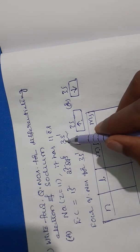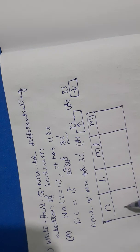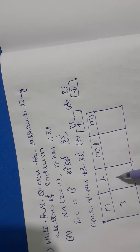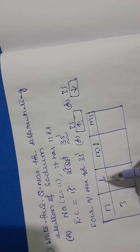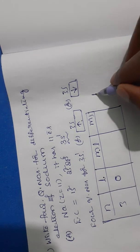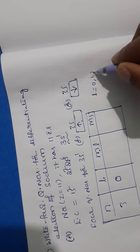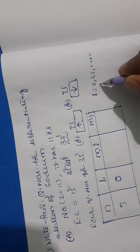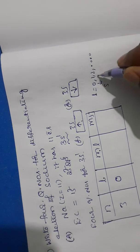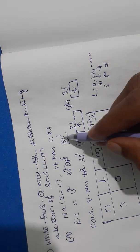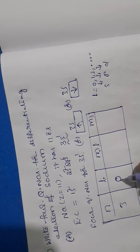The principal quantum number N equals 3, since the electron is in shell 3. This electron is present in the subshell S. The angular momentum quantum number L is 0 for S, 1 for P, and 2 for D. So for this 11th electron present in S, the L value is 0.